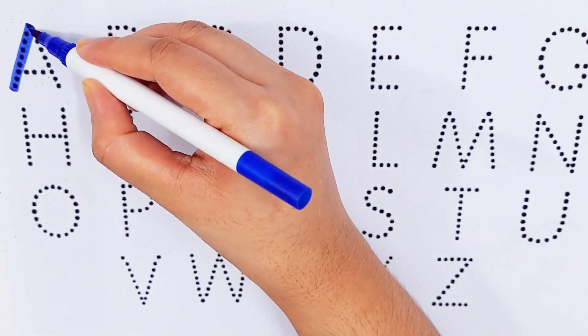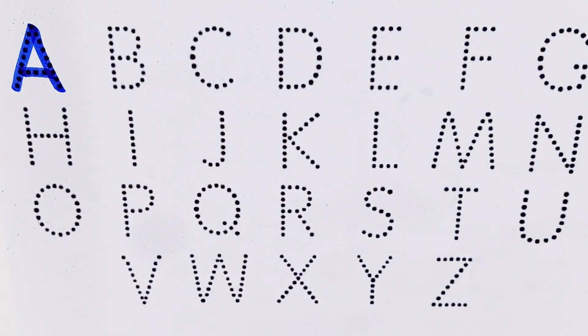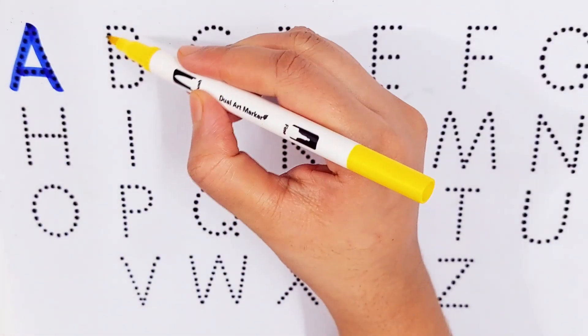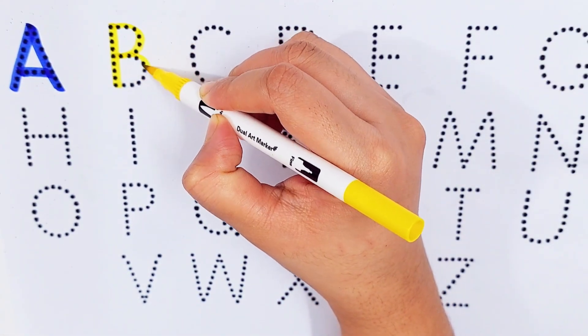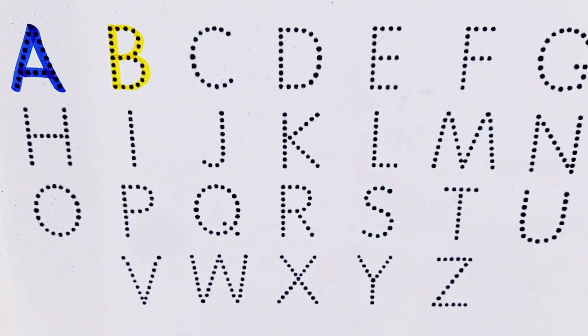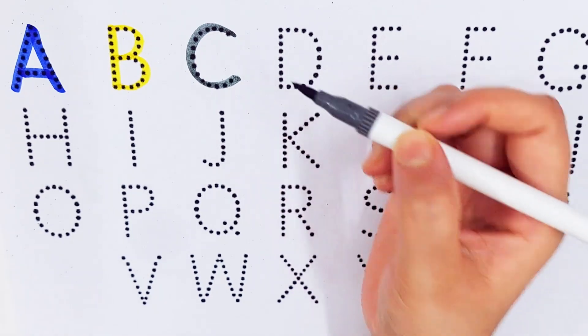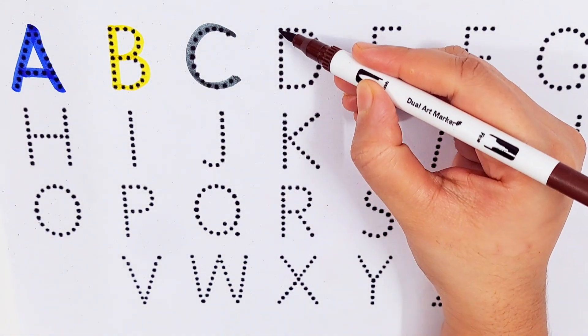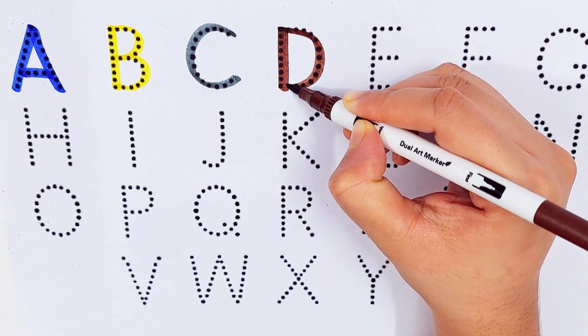Dark blue color. A, A for airplane. Yellow color. B, B for butterfly. Gray color. C, C for caramel. Brown color. D, D for door.